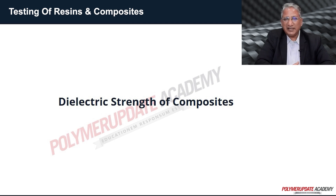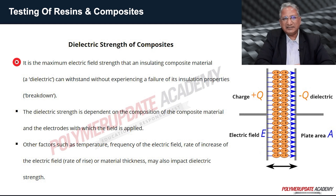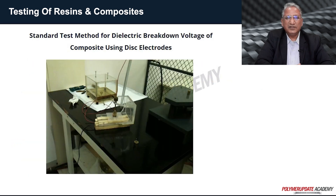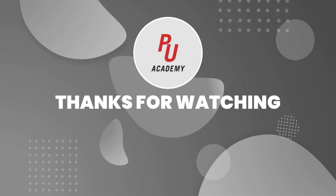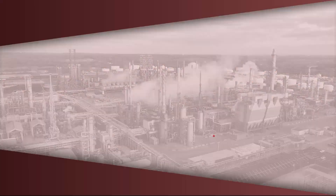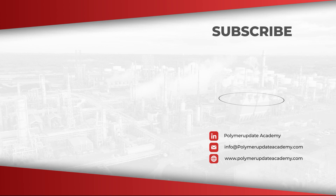Dielectric strength is an important electrical property of polymeric composites. It is the maximum electric field strength that an insulating composite material (dielectric) can withstand without experiencing failure of its insulating properties, known as breakdown. Dielectric strength depends on the composition of the composite material and the electrodes with which the field is applied. Other factors such as temperature, frequency of the electric field, rate of rise of the electric field, and material thickness may also impact dielectric strength.